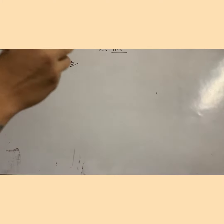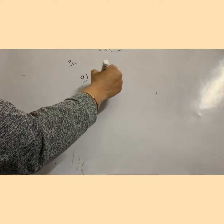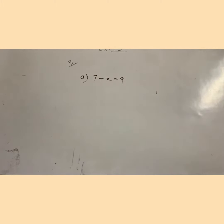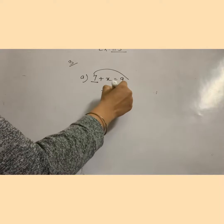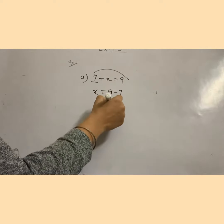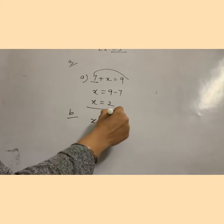Yes dear students, first part we have to solve this equation. This is a really easy exercise. We have to find out the value of x. Then this 7 will go here and it will be subtracted. So what is the value of x? 2. In the b part, x minus 9 is equal to 20. This 9 will go here and this minus will convert into positive.